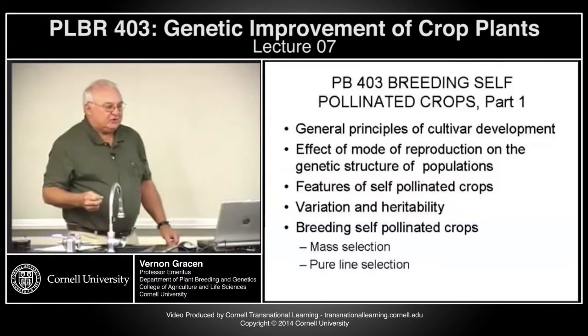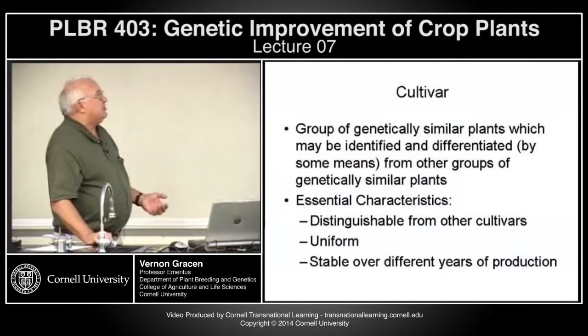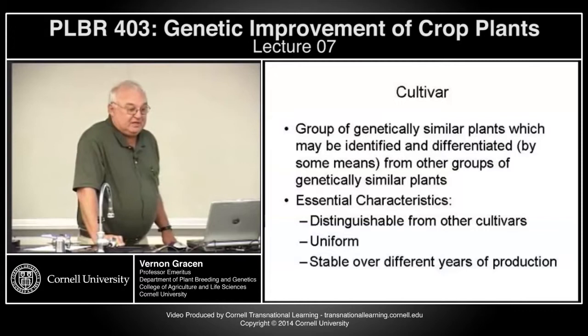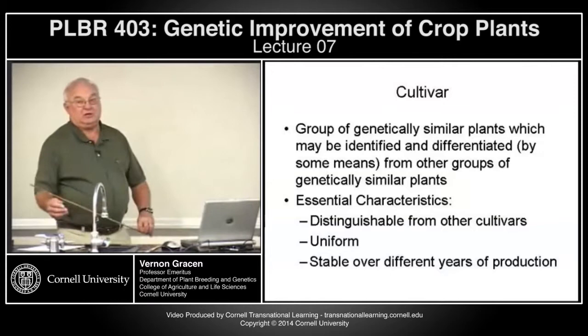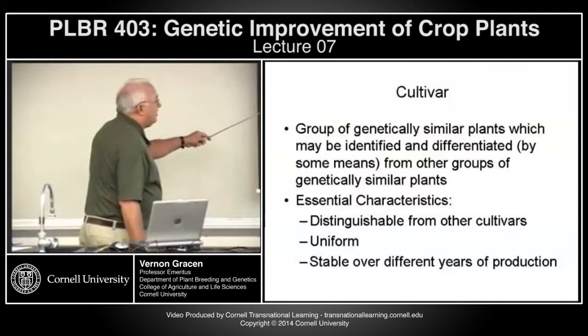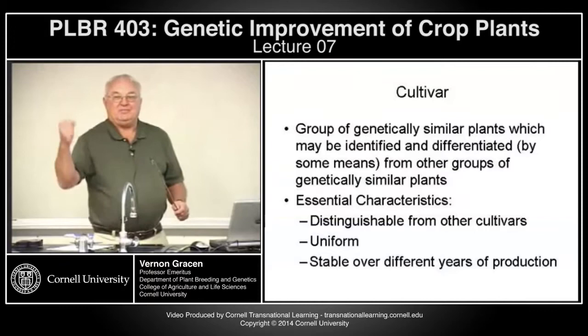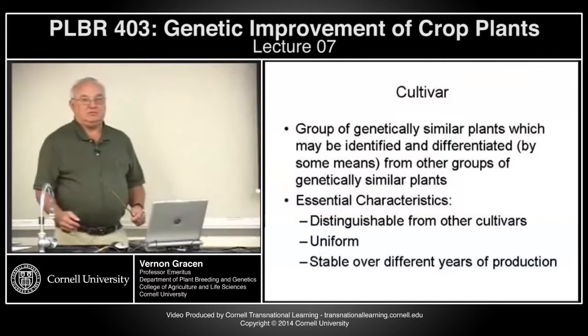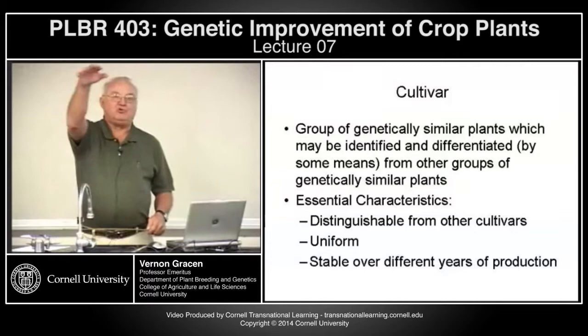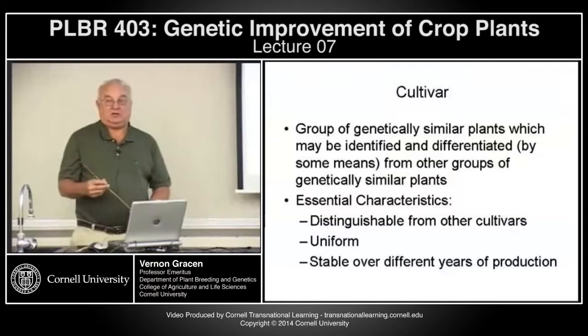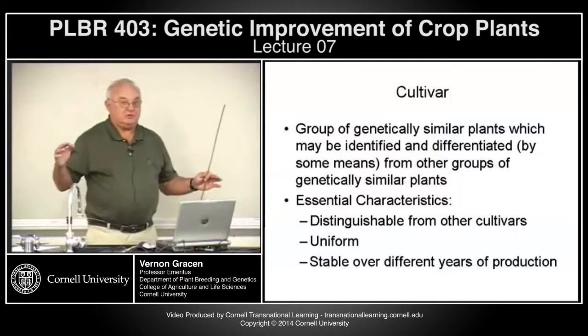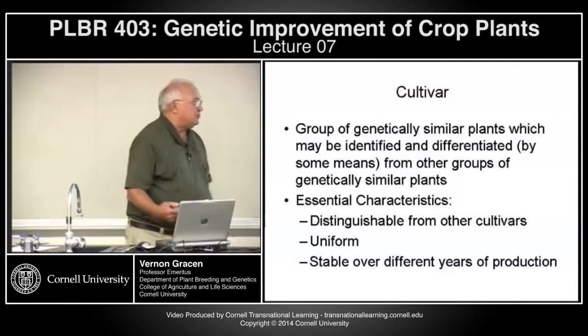Cultivars are basically groups of genetically similar plants which can be differentiated by some means from other groups of genetically similar plants. In order to have a cultivar, the three characteristics required to get intellectual property protection are: they must be distinguishable from other varieties — there must be genetically controlled traits that distinguish your cultivar from others; they must be uniform, so that when you plant out a field, all plants are fairly uniform in appearance and performance.